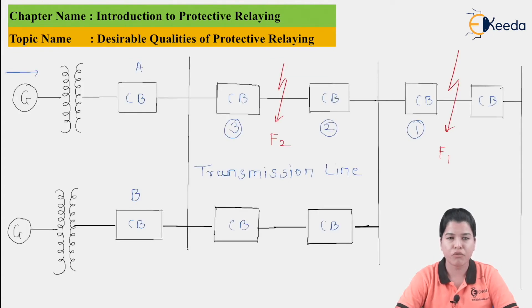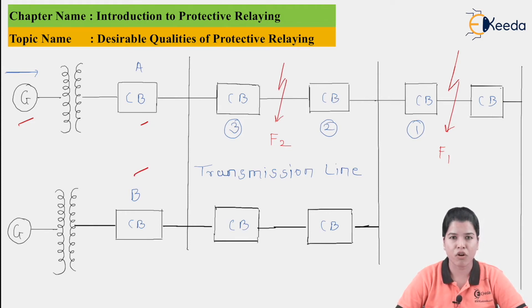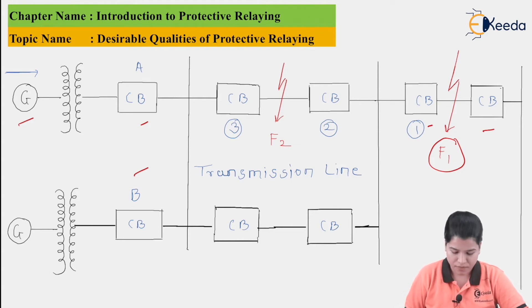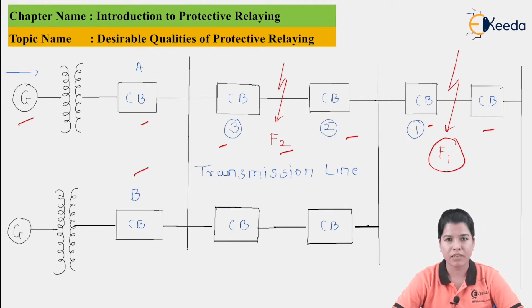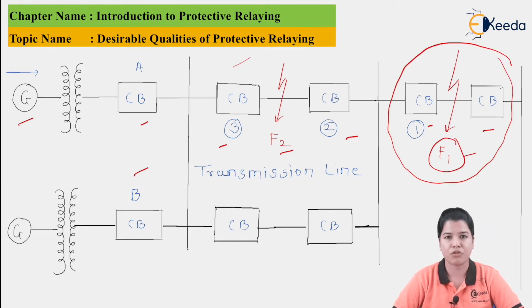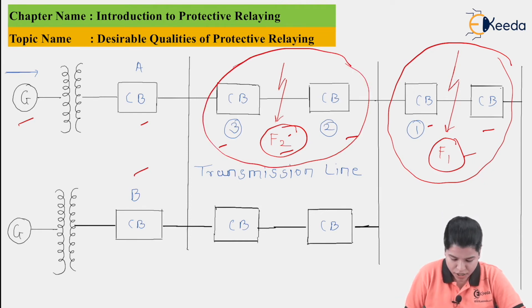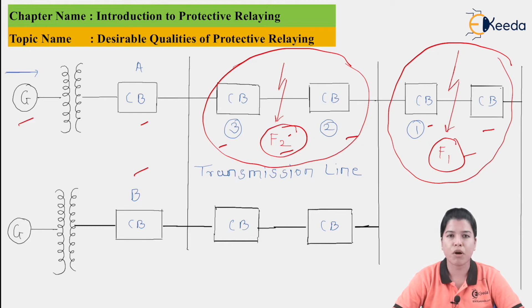A figure shows the protection system for a transmission line. The supply goes from the generator through Circuit Breaker A and Circuit Breaker B. Two faults are considered: Fault F1 occurring between these circuit breakers, and Fault F2. The protective relay should discriminate whether the fault has occurred in its own zone or a neighboring zone. If F1 occurs, the circuit breaker in that zone should operate — not the circuit breaker in the neighboring zone. Similarly, if F2 occurs, the circuit breaker in that zone should operate. This is proper selectivity and discrimination.